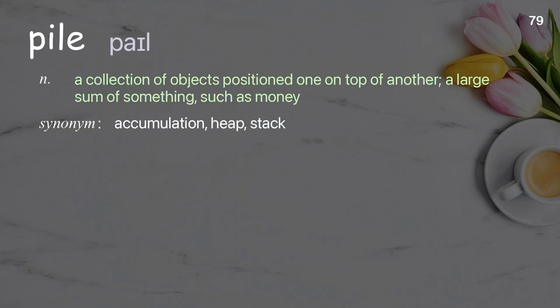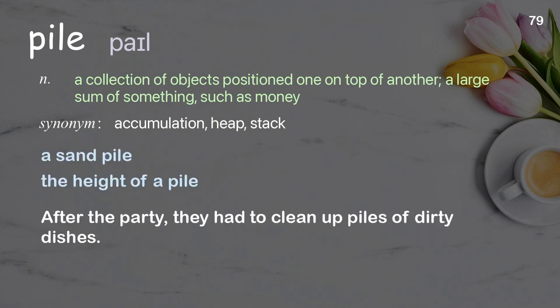Pile: a collection of objects positioned one on top of another; a large sum of something, such as money. Examples: a sand pile, the height of a pile. After the party, they had to clean up piles of dirty dishes.